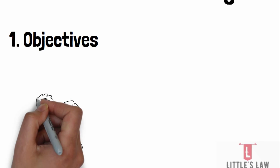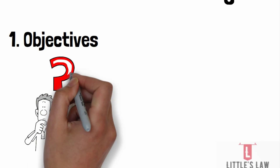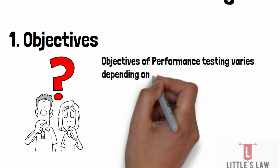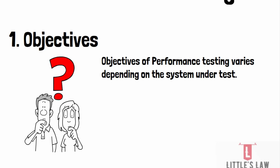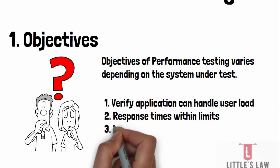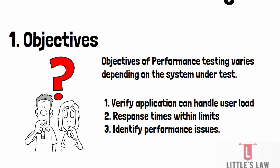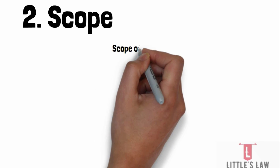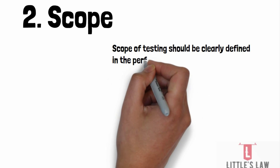The objectives of the performance testing project may vary depending on the system under test and the goals of the testing. For example, if we are testing a web application, the objectives include verifying that the response time is within acceptable limits and identifying any scalability or performance issues.